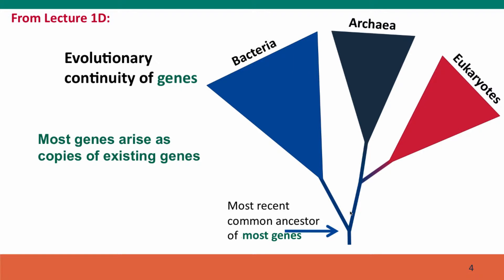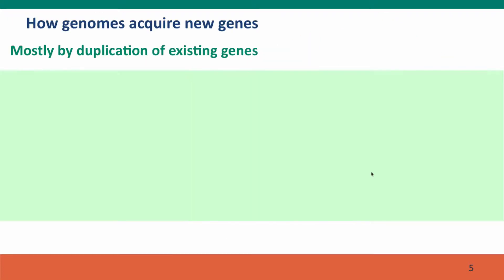Most genes, it's clear, arise as copies of existing genes. And for some genes, they're so well conserved across the different groups that we can also trace their ancestry back almost all the way to the common ancestor of all living things.